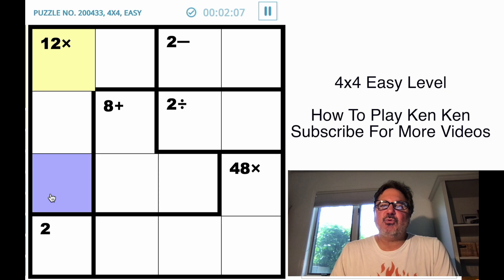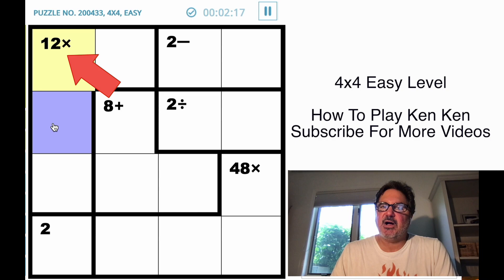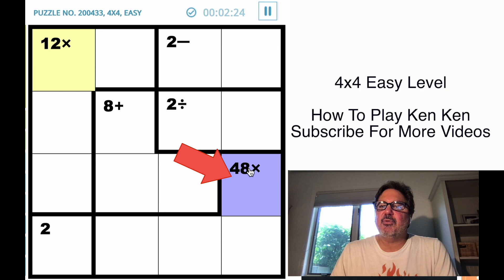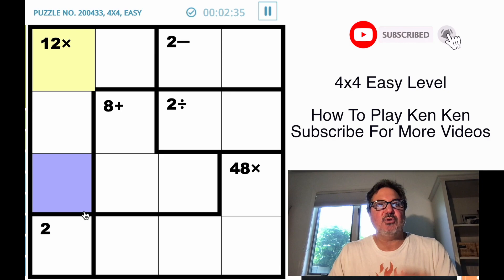What you need to do is have numbers one, two, three, four where the numbers within the larger border equal that number. In this particular case, you need to have numbers that when multiplied together equal 12 using this box, this box, this box, and this box. In these four, you would need four numbers that go together that multiply to 48. So let's go ahead and walk through a simple puzzle.